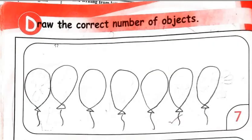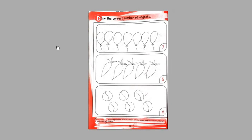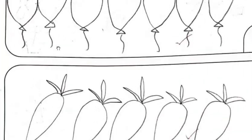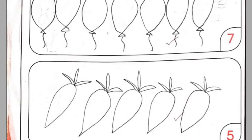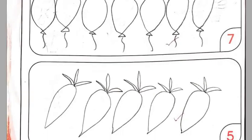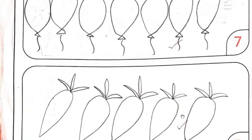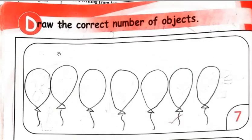This is your page — 'Draw the correct number of objects,' page number 22. Here they have given you a number in a box. Corner pe dekhen — wo hai number 7. Yahan pe aapne 7 objects, yane ke koi se bhi 7 objects draw karna hai. Humne yahan pe balloons draw kiye hain.